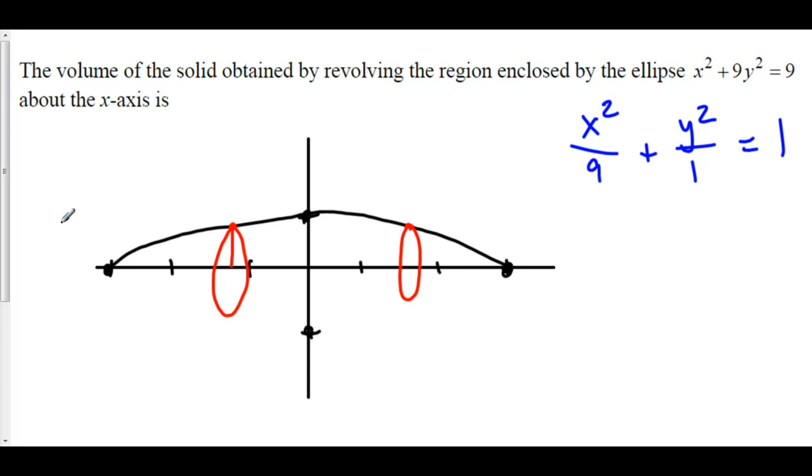There are two things that we need. We need to know our initial point right here and our ending point over here. By graphing, it looks like we are going from negative 3 to positive 3.